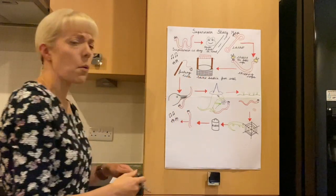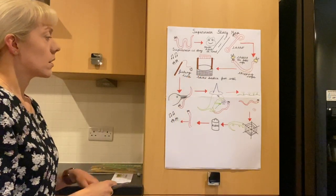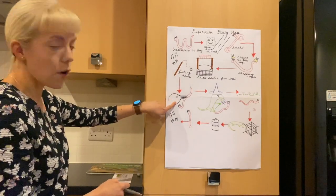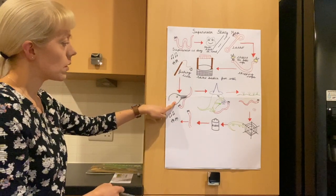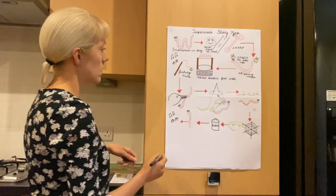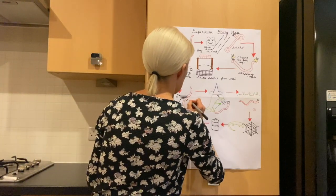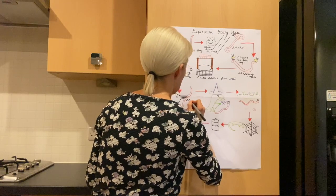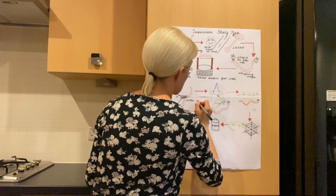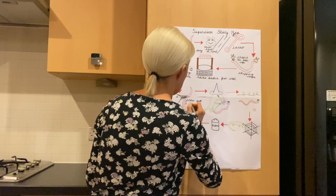And then what happened next in the story? We follow the arrow down. It was the crow, wasn't it? The crow got Superworm, so we can label it 'crow got Superworm.'